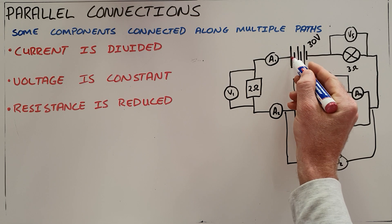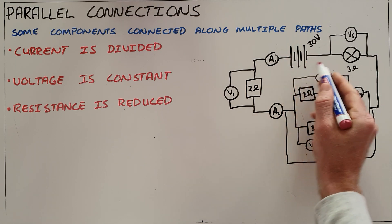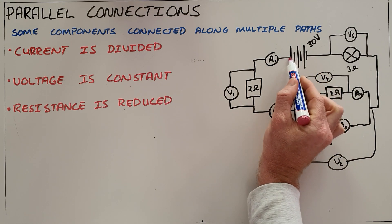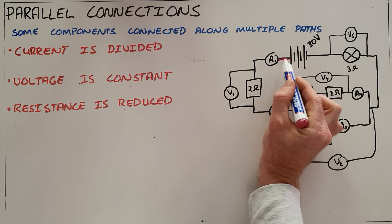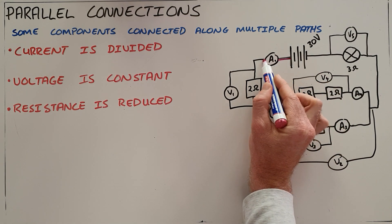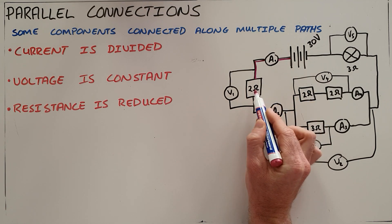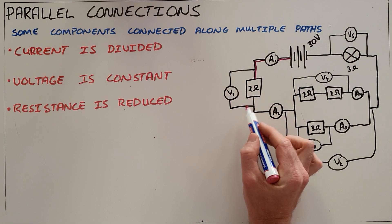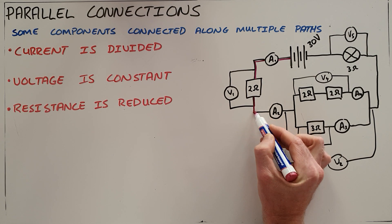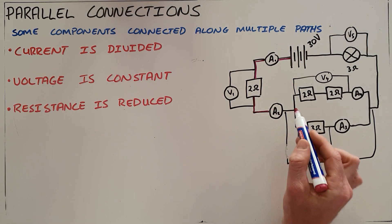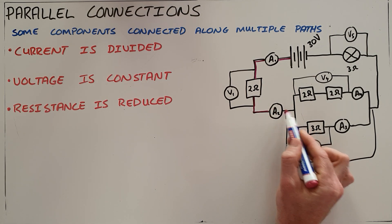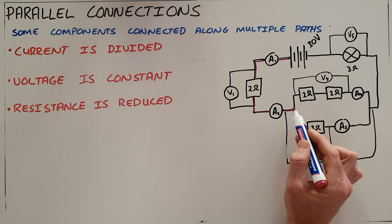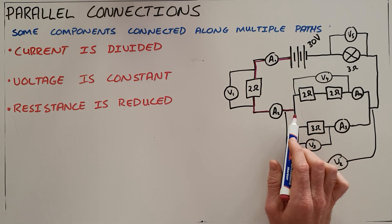The current passing out of this battery, which is made up of three cells, follows a direct path where it must go through ammeter A1, through the 2 ohm resistor, not through a voltmeter because its resistance is high, then through ammeter A3, and not through voltmeter V2 — until we reach a parallel connection.